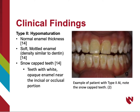In type 2 AI, the enamel is of normal thickness, but is often soft and mottled, having a similar density to that of dentin. Teeth also tend to have a white, opaque appearance near the incisal or occlusal areas, giving them a snow-capped appearance, as can be seen in the image.